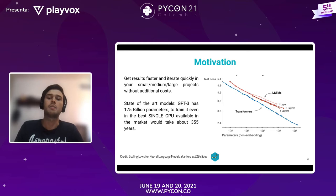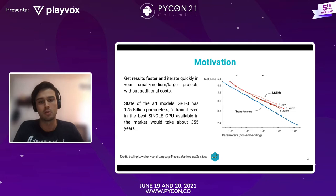En la imagen que les muestro a la derecha, pueden ver que a medida que uno aumenta los parámetros en un modelo de Deep Learning como los Transformers, obtiene mejor loss en el test set y mejor accuracy.